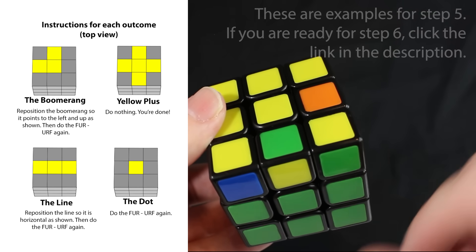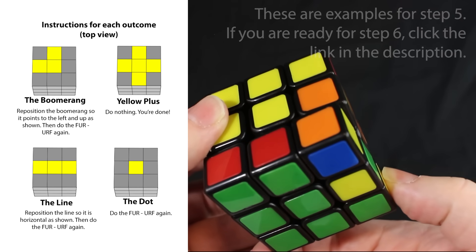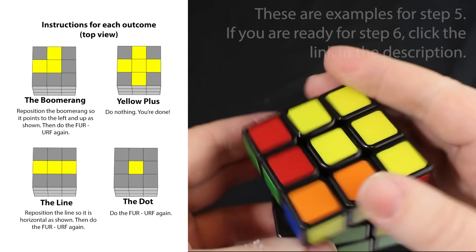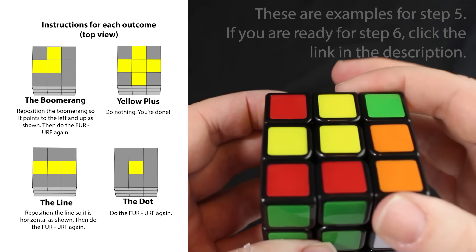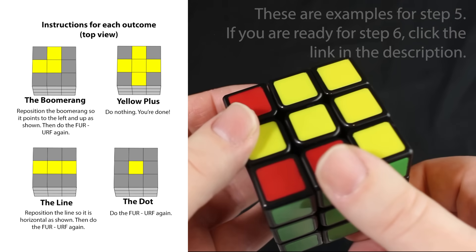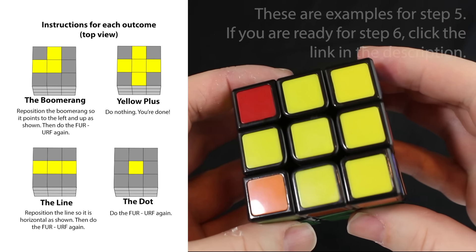We do the clockwise moves, those three clockwise moves. We do the front clockwise, then the top, and then the right side. Then the counterclockwise: we do the top counter, then the right, and then the front. Then we got the yellow plus.